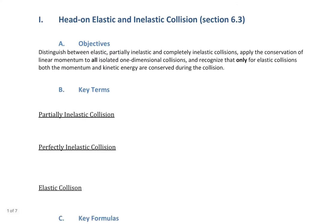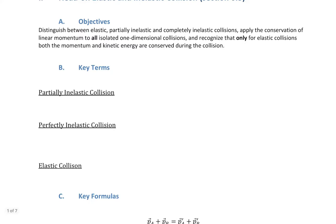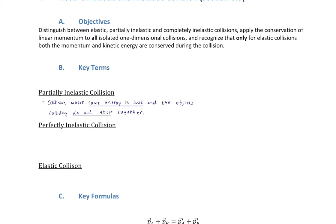Our key terms fit together really nicely — there are just three of them, and they're all different types of collisions. Type 1 is probably the most realistic: a partially inelastic collision. It's a collision where some energy is lost and the objects do not stick together.